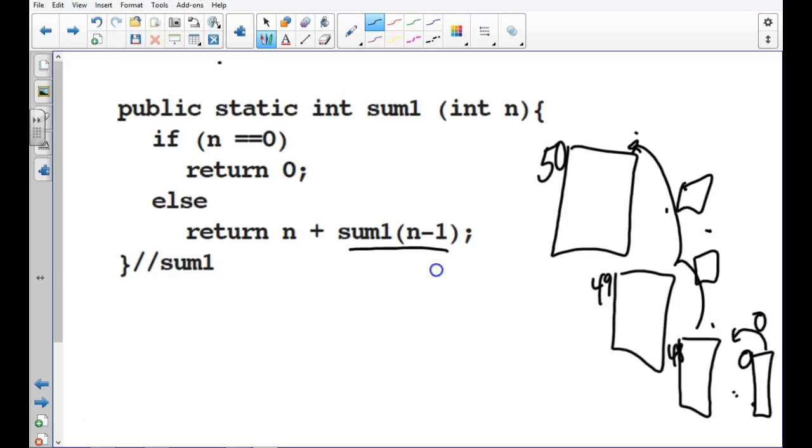Right? Essentially adding up, well, actually no, that's not what it is. It's adding up all the values between 50 and 0. It's adding them all up. Make sense?